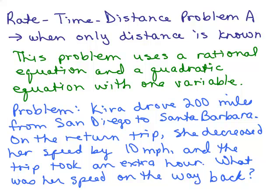Here's the problem. Kira drove 200 miles from San Diego to Santa Barbara. On the return trip, she decreased her speed by 10 miles per hour and the trip took an extra hour. What was her speed on the way back? First of all, it should make sense to you. If you're going slower, it's going to take you longer.